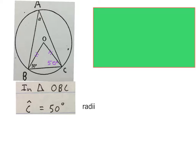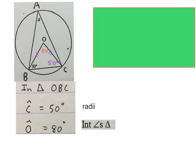We start by saying in triangle O, B, C, this triangle here, angle C will be 50 degrees and your reason is radii. You know that from the center to the circumference is radii and all radii in one circle are equal. Then we will say angle O is equal to 80 degrees, interior angles of a triangle.